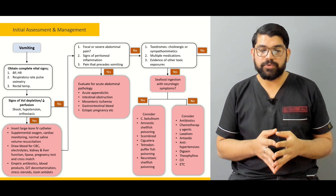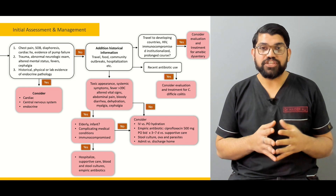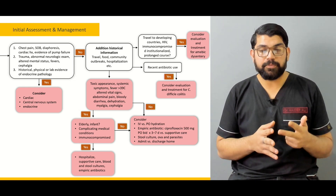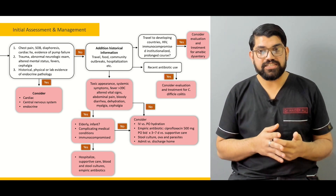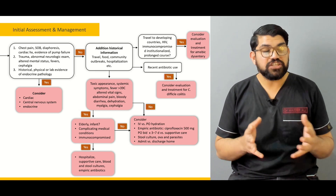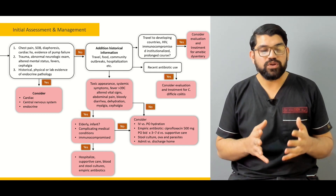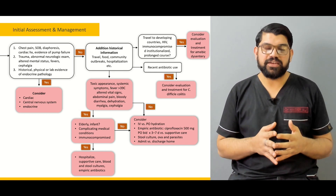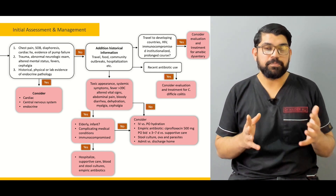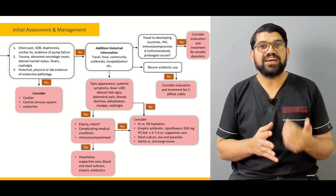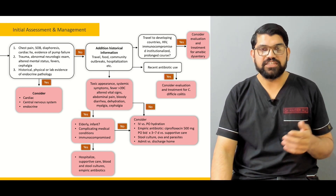We'll talk about focal abdominal pains, peritoneal inflammation, or signs of CNS that can cause vomiting and how to approach them. Moving on to the approach in a patient with acute MI, approach in a patient with trauma, approach in a patient with endocrine emergencies, and approach in a patient with toxic appearance or abnormal vital signs. We'll also cover whom should be admitted, whom should be treated in-hospital, whom should be sent home, what is a per oral trial challenge, and other things to look for in approaching a patient with vomiting.